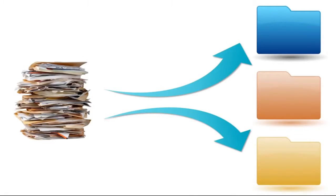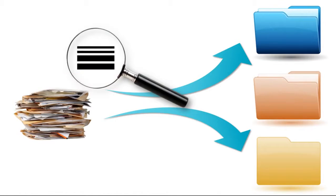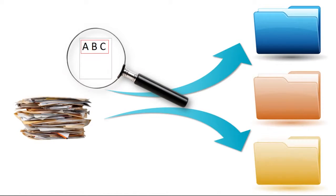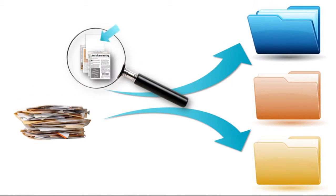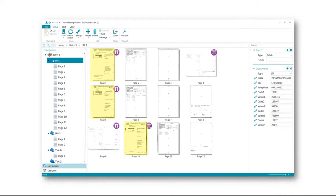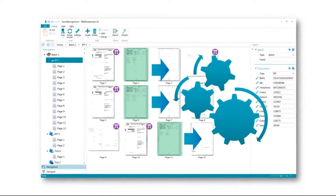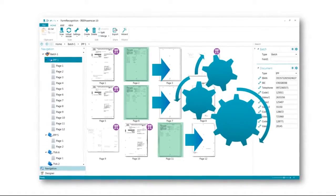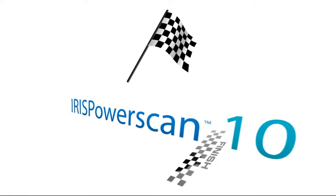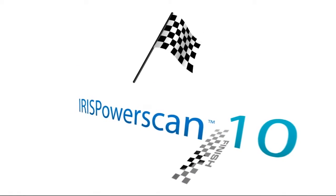Sorting. As images are imported and cleaned up, documents are classified and separated thanks to barcodes, patch codes, text, blank pages, page count, or automatic layout identification. Since pages are also identified individually, software operations are only applied when needed, which makes for the fastest processing times.